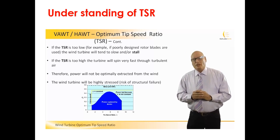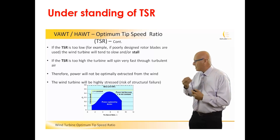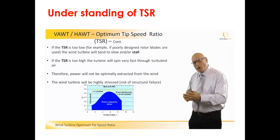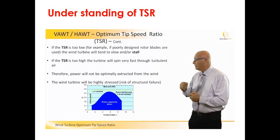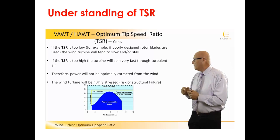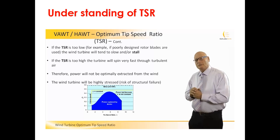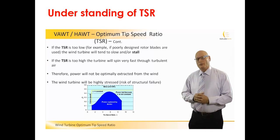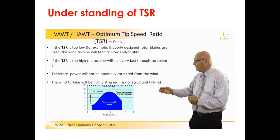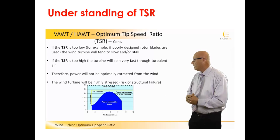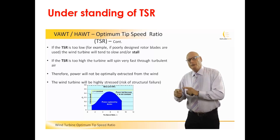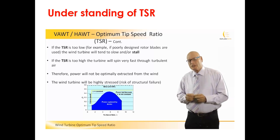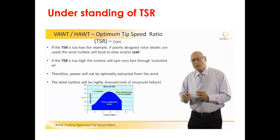Looking at the CP versus TSR graph: if TSR is too low — for example, due to poor design — the wind turbine will tend to slow or even stall, placing it on the left of the graph below cut-in speed. If TSR is too high, the turbine spins very quickly, the wind sees a solid wall, efficiency drops, and we are on the right-hand side of the graph. Additionally, too high a rotation speed causes mechanical stresses and risk of structural failure.